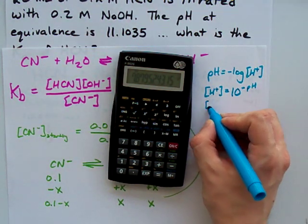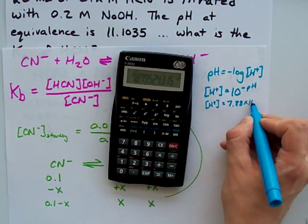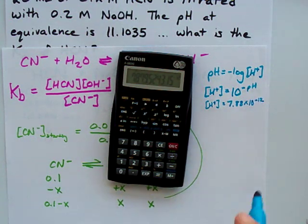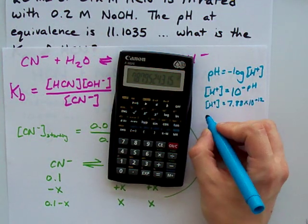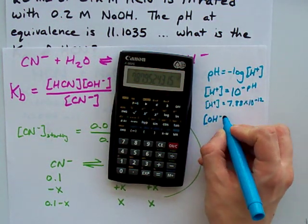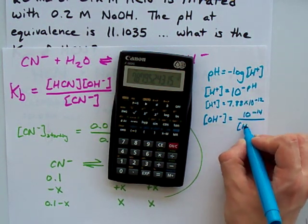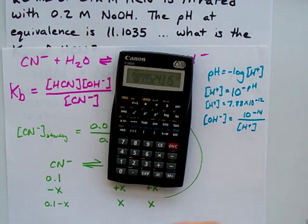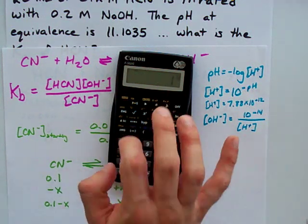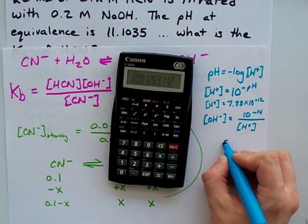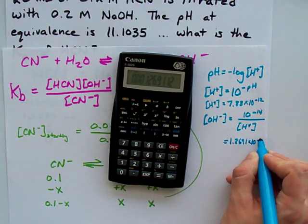I end up with 7.88 times 10 to the minus 12. Now I rounded because I ran out of space. I recommend not rounding during this kind of calculation. What you'll remember is that the OH concentration at equilibrium is 10 to the negative 14 divided by that. 14's pop up all over the place, and so I need 10 to the power of negative 14 times that. I end up with 1.2691 times 10 to the minus 3.